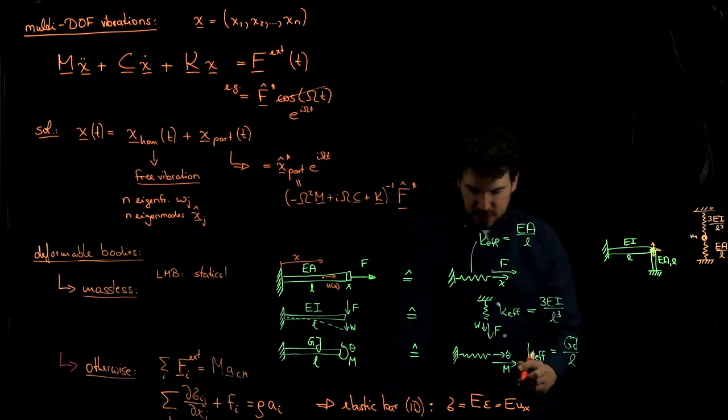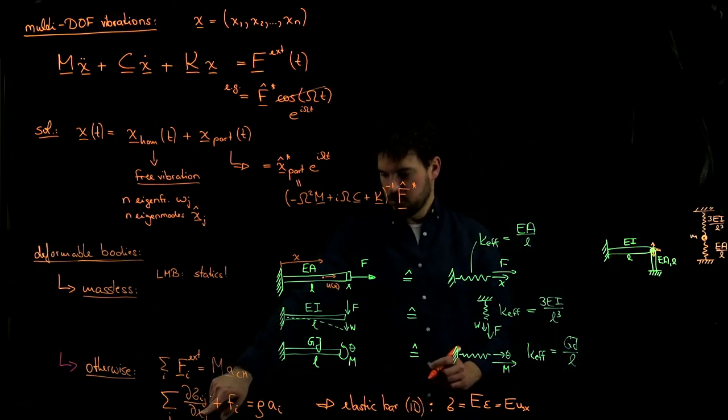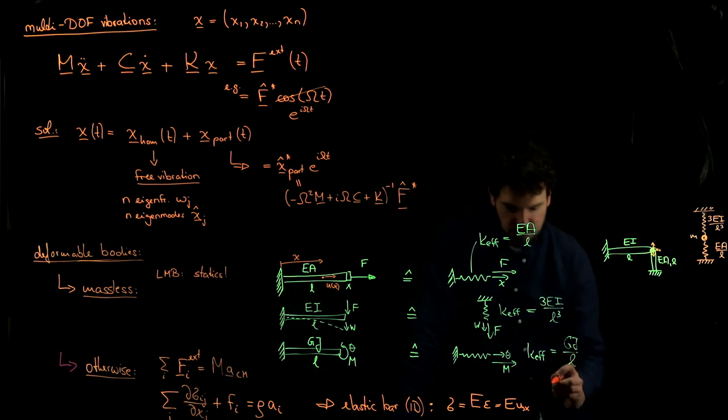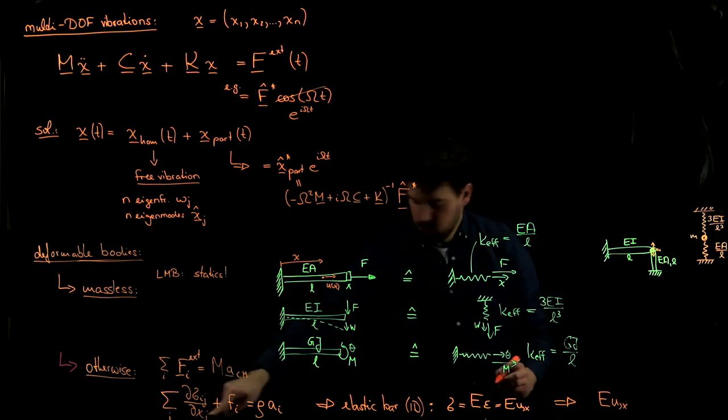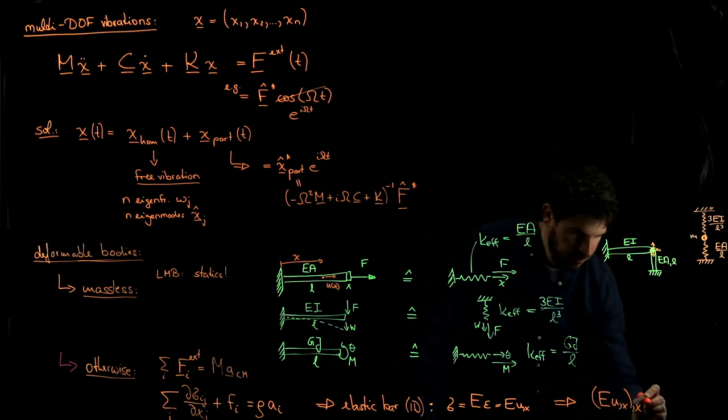And so if this is the stress, if we were to plug it in here in 1D, my derivative is just the derivative comma x, there's nothing else to do. This would be the body force in the x direction, this is the acceleration in the x direction, from which we obtain that E times u comma x the stress, another derivative with respect to x, plus the body force in the x direction.